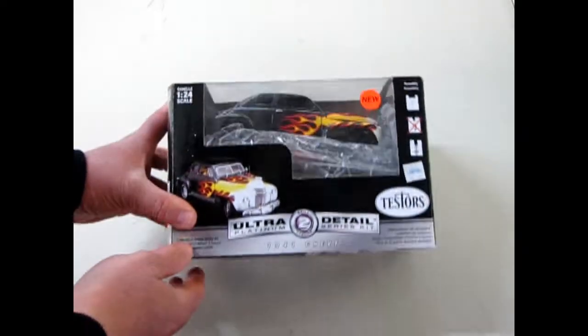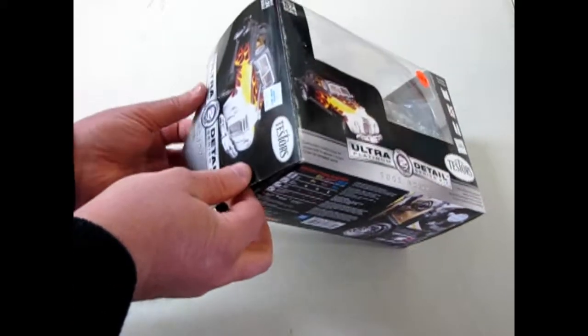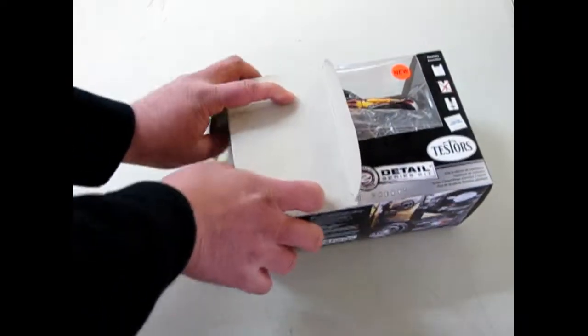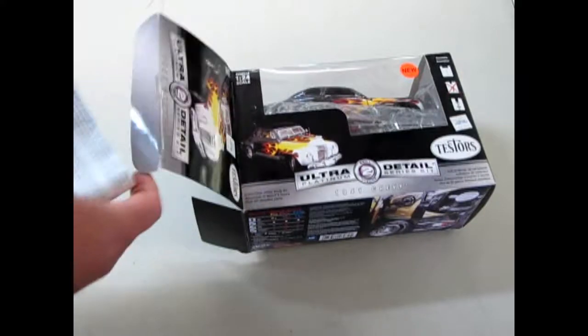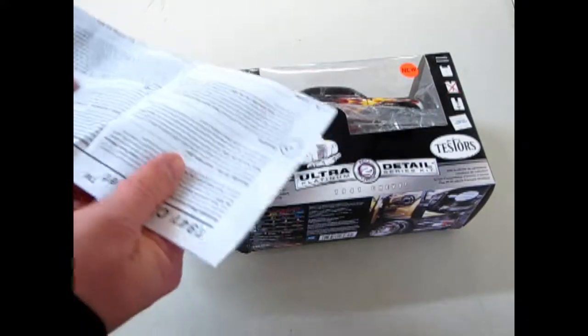Now this is a die cast car that I picked up in 1:24 scale. Ooh, you can hear the big thump of the metal. Now let's move that there.